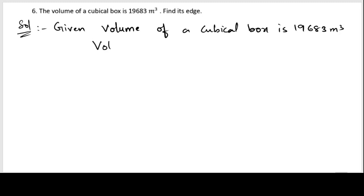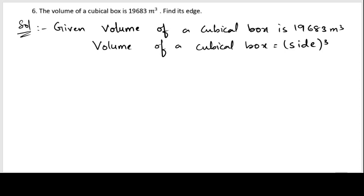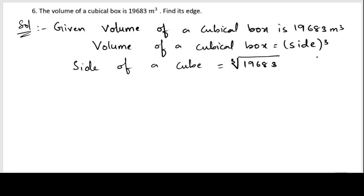We know the formula of volume of a cube: volume of a cubical box equals side cubed. So to find the side of a cube, we need to take the cube root of the volume — the cube root of 19683.